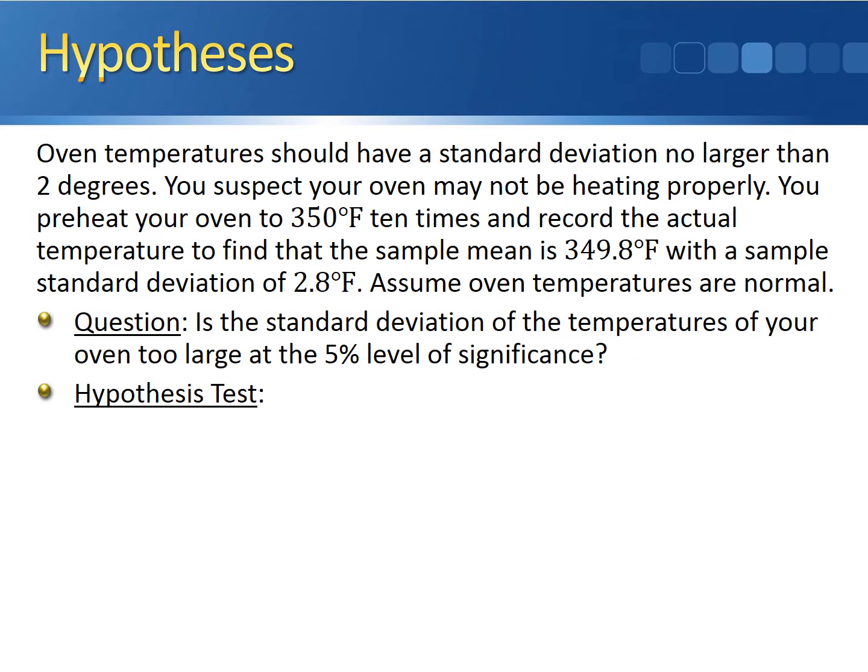Based on the context of the problem, we already know that oven temperatures are normally distributed, so the only condition that we need checks out. We're good to go ahead and start the test. Before we do that, let's write down a summary of everything that we know. The sample standard deviation was 2.8, and the sample size was 10.